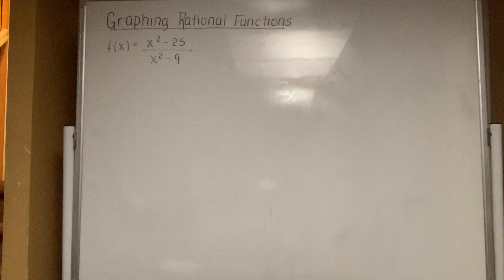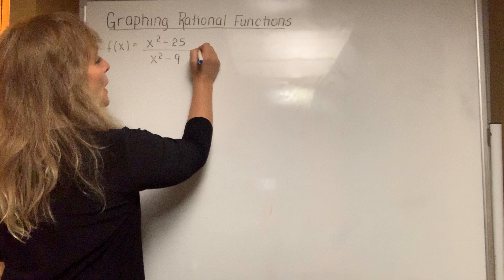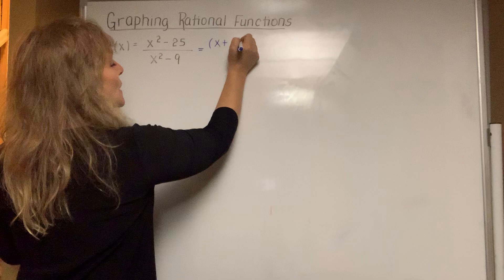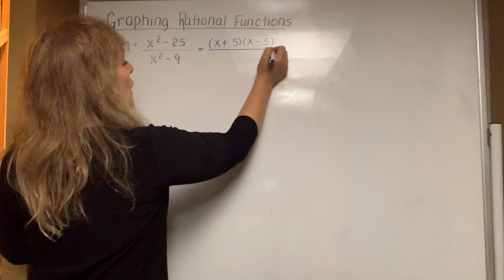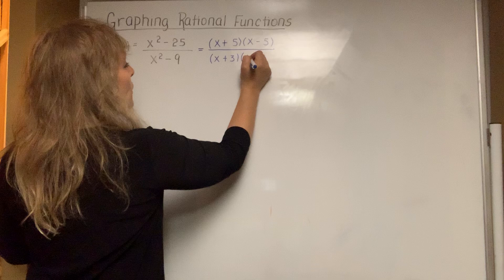Today's lesson is on graphing rational functions. The word rational means that it will be expressed as a fraction. When you look at the function given, you can easily factor the numerator and denominator — that is the first thing to do. Using dots in the numerator, it is x plus 5 times x minus 5. Using dots in the denominator, you end up with x plus 3 and x minus 3.